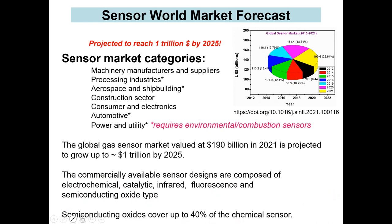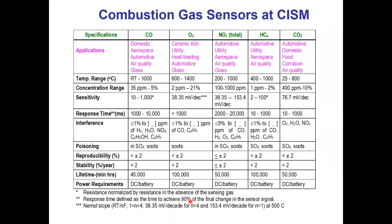Here are the types of sensors that we work on. Combustion gases include CO, oxygen, NOx, hydrocarbons, and CO2. You can see the targeted industrial applications, and for some of them the temperature range can vary anywhere from room temperature to very high temperatures — particularly in some of these industries.